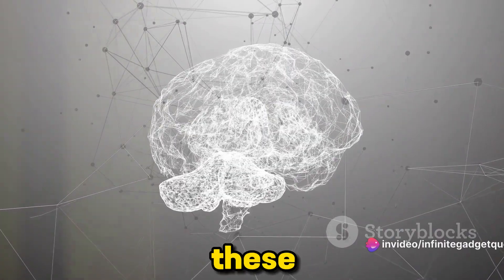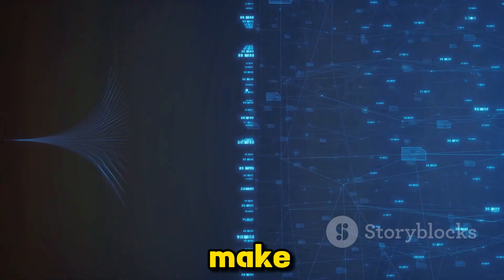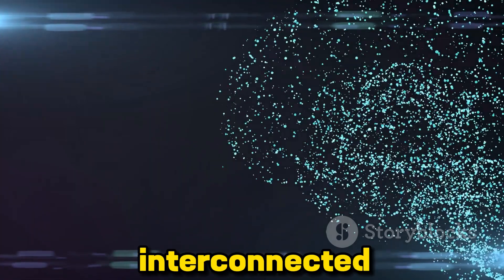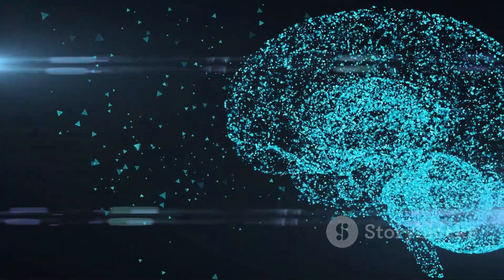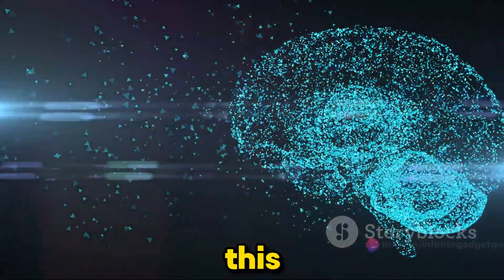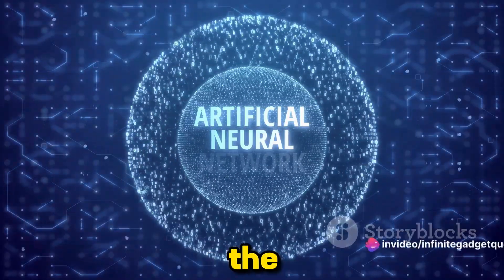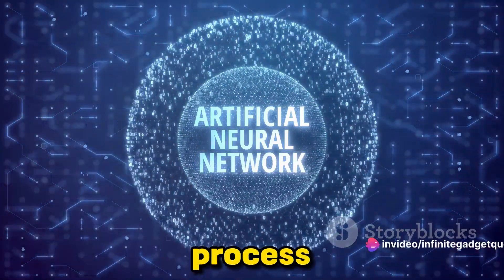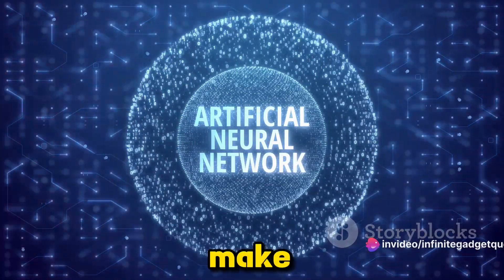But there's more. These artificial neurons don't just make isolated decisions. They're interconnected, sharing information, and influencing each other. This intricate web of interactions forms the basis of how neural networks process information, learn, and make decisions.